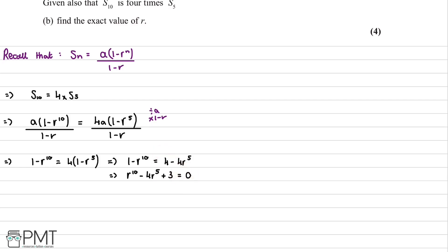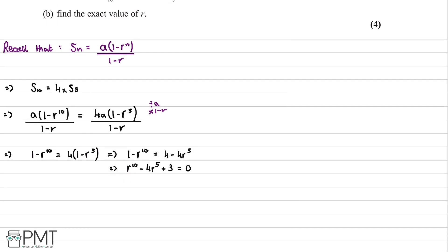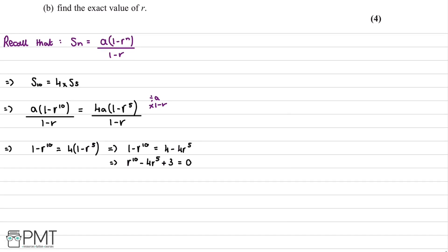To solve this more easily, we let x equal r to the power of 5, so x squared equals r to the power of 10. Substituting gives us x squared minus 4x plus 3 equals 0, which is a quadratic and much easier to solve.